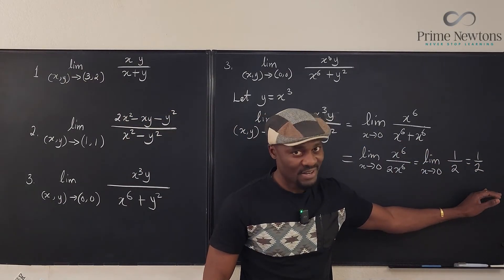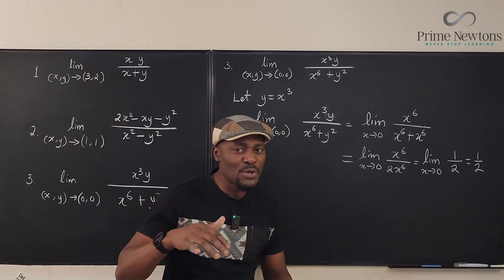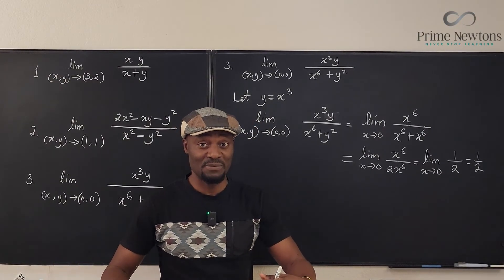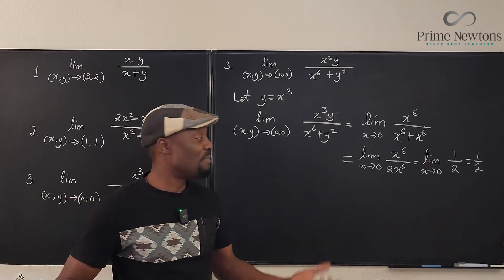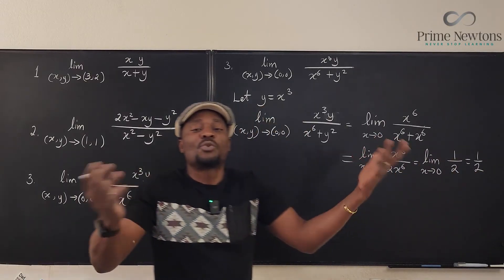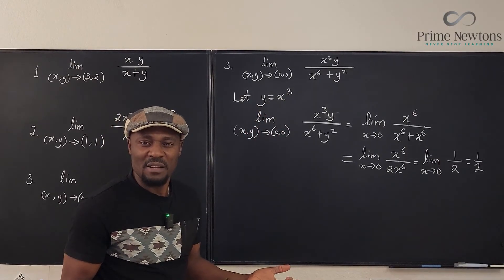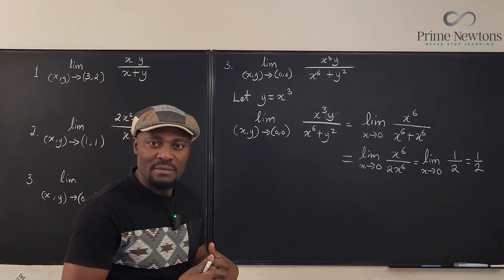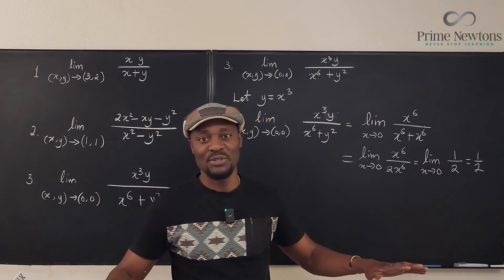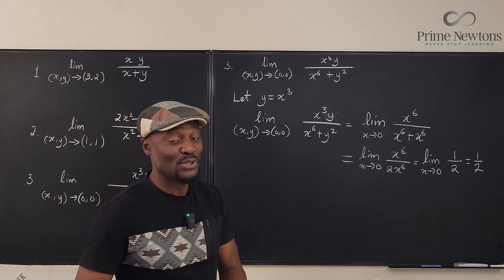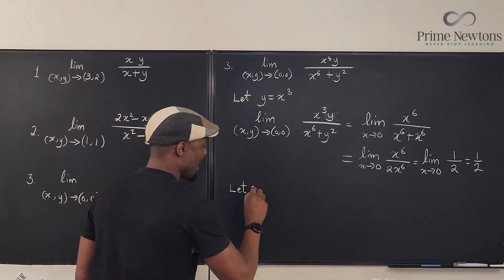Does that mean this is the limit? No. That's the problem with multivariable functions. You don't know whether this is the limit, because the limit, remember how we used to do, the limit from the left has to be equal to the limit from the right. So the same thing, you have to pick multiple directions and make sure that all the directions you will ever pick will always give you the same answer. So let's try to find another direction. We just did let y be equal to x cubed. We can do something else. What if we say, let x be equal to y. That's another direction. So if we now find another direction and the answers are not the same, then definitely the limit does not exist. If the answer is the same, we may have to try a third one just to confirm.